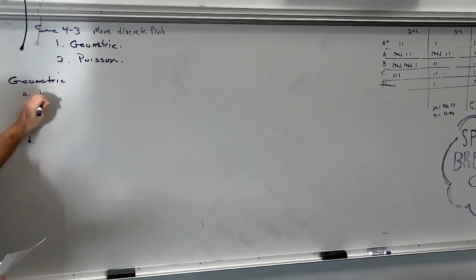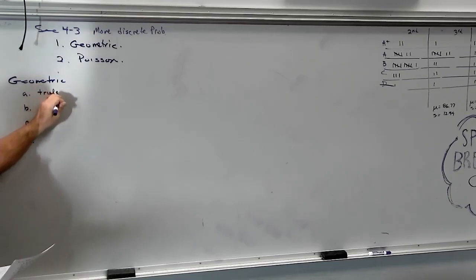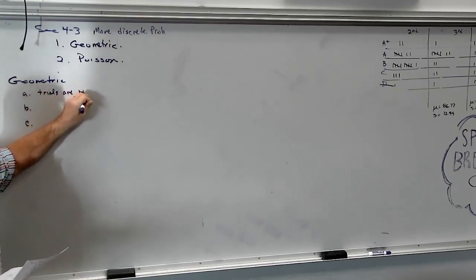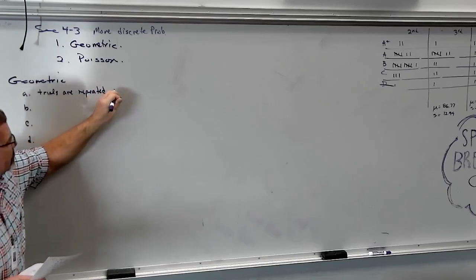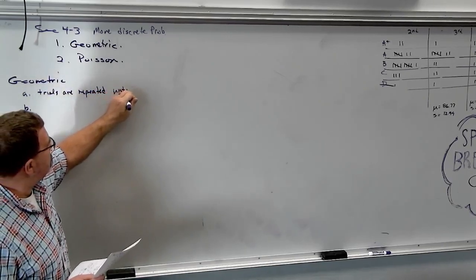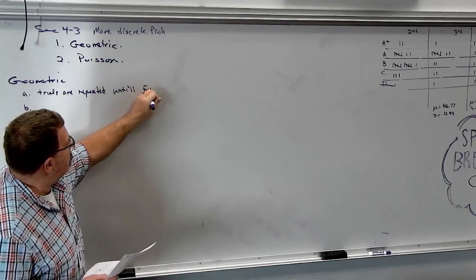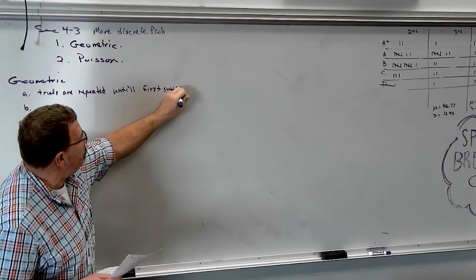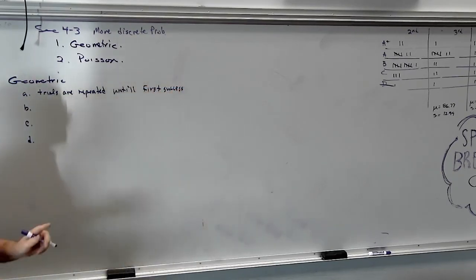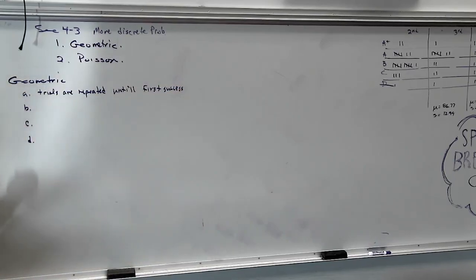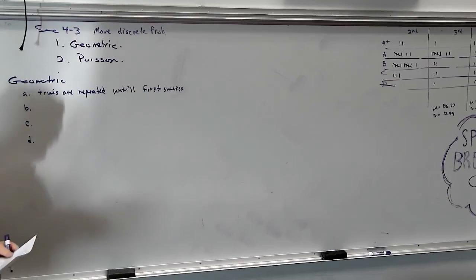First off, for geometric, what it is is your trials are repeated until success. We'll say first success. So what you're going to do is you're going to keep running this trial over and over until you get to your first success. Like our examples of basketball, you know, how many shots in a row do you have to shoot until you make your first free throw?